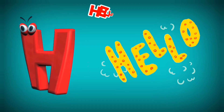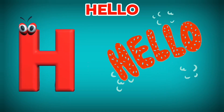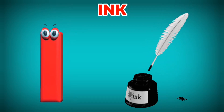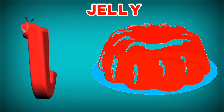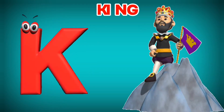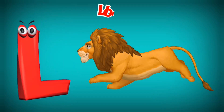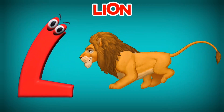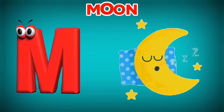H is for Hello. H, H. Hello. I is for Ink. E, E. Ink. J is for Jelly. J, J. Jelly. K is for King. K, K. King. L is for Lion. L, L. Lion. M is for Moon. M, M. Moon.